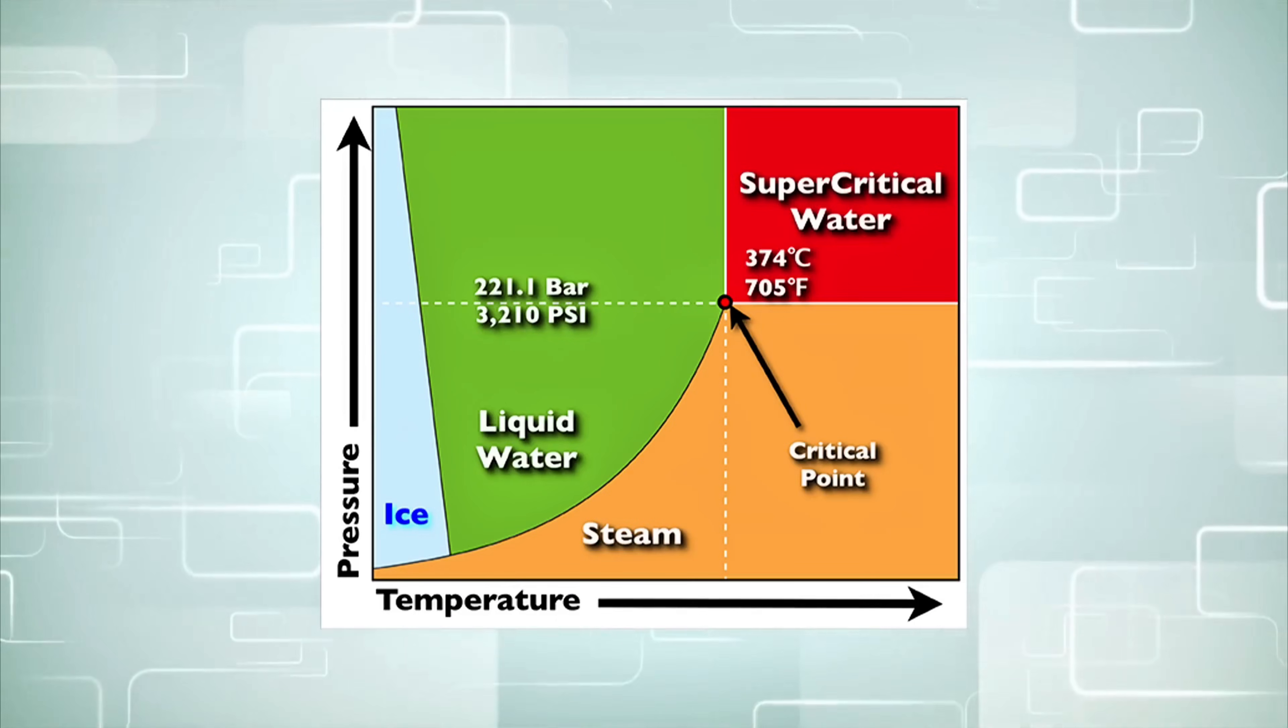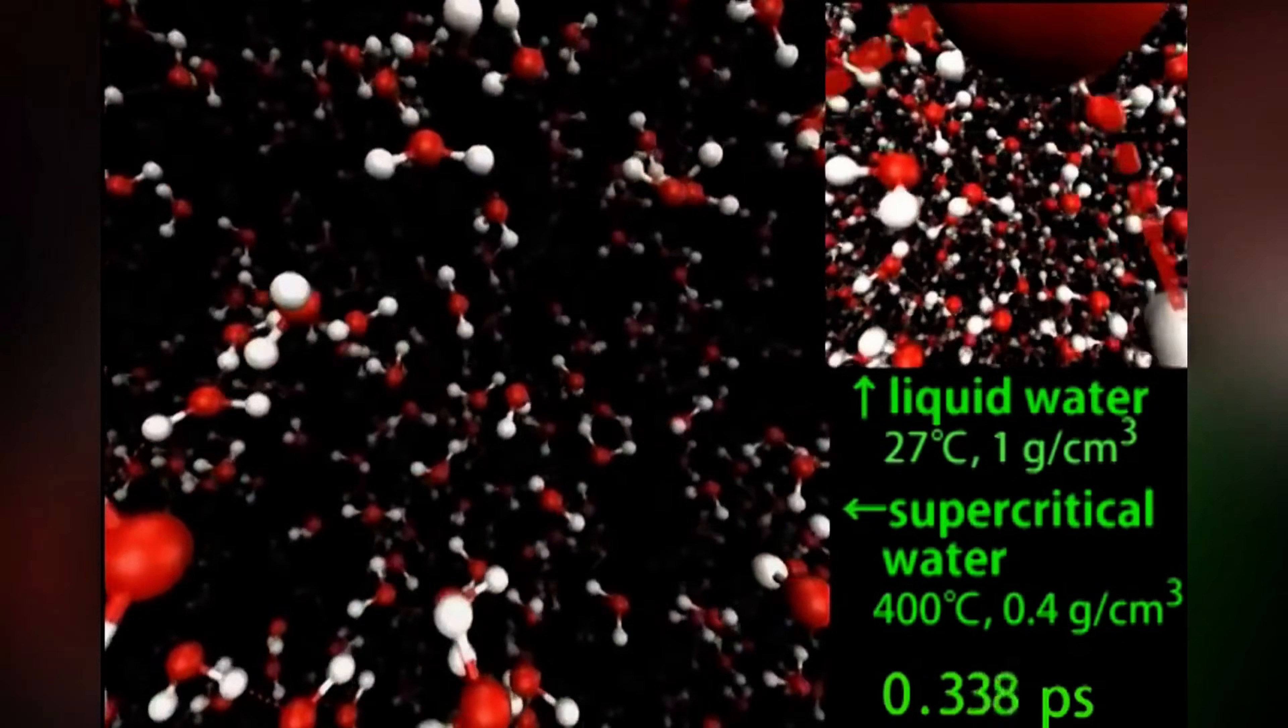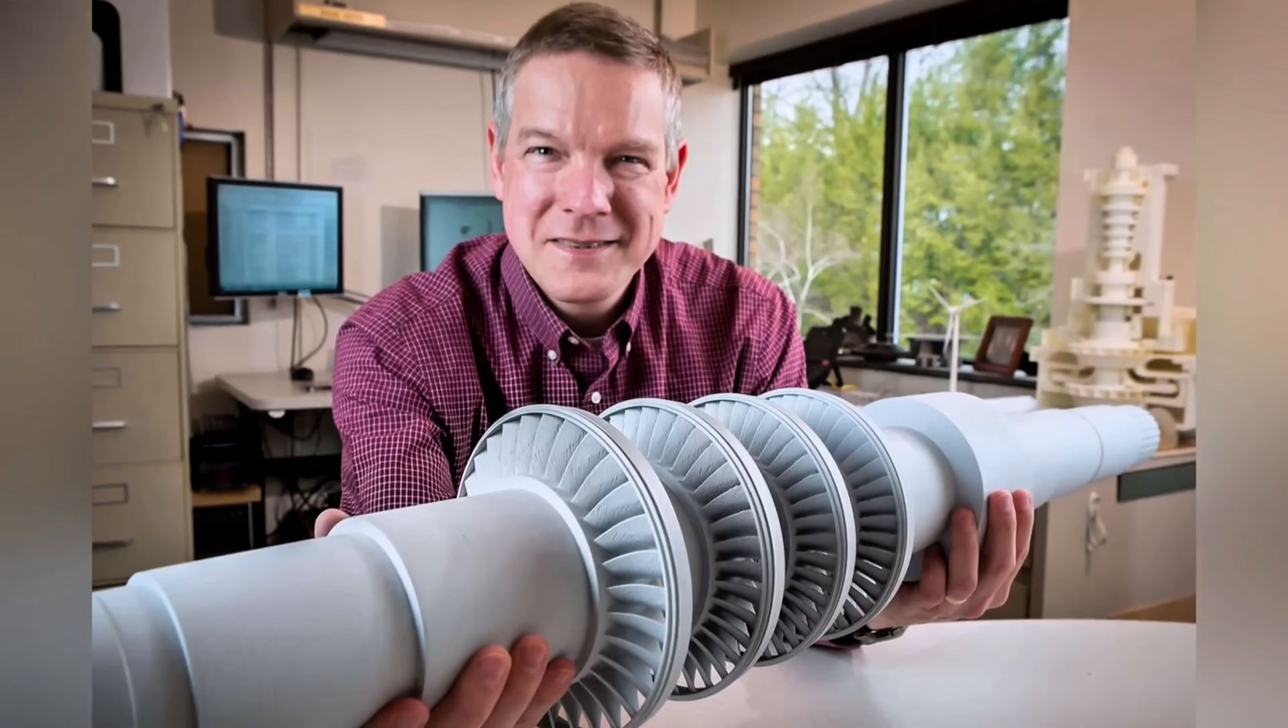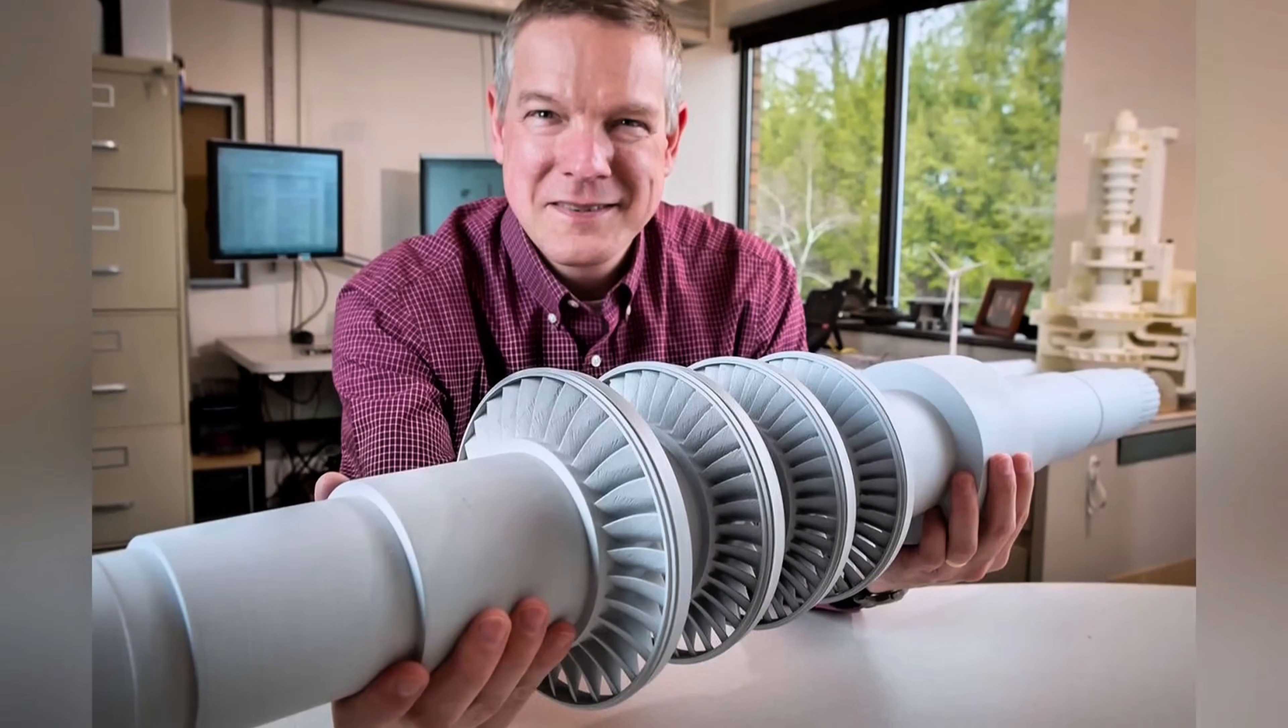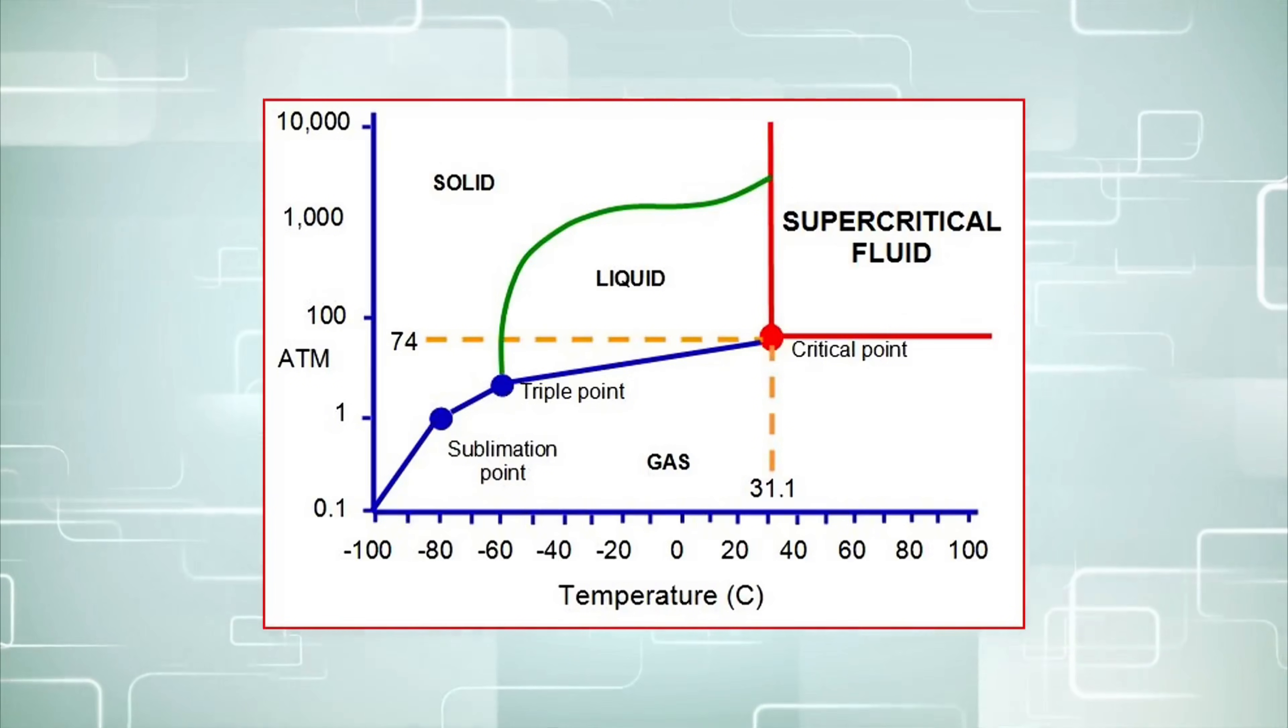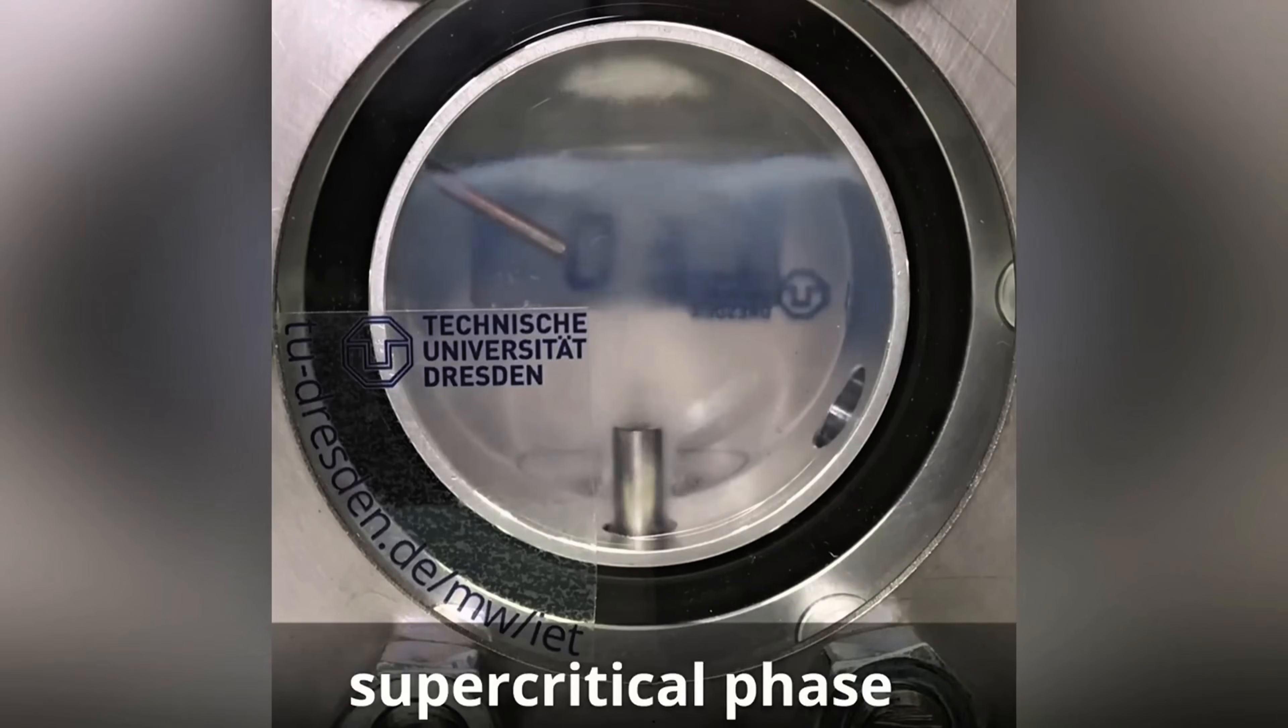Another huge benefit is flexibility and startup speed. Steam plants have large boilers and water systems that need to heat slowly. It can take 30 minutes or more to go from cold to full power. An SCO2 plant, with its compact design, can start and reach power in just a few minutes. This lightning-fast ramp-up is perfect for modern grids that use a lot of wind and solar. You could have an SCO2 plant standing by, ready to roar to life whenever renewables dip. It's the difference between driving a hot rod and a cargo ship.